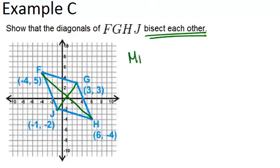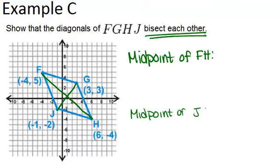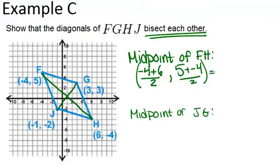So we're going to find the midpoint of each diagonal. So the midpoint of FH, and then we'll find the midpoint of JG. So to find the midpoint, we average the X coordinates of the endpoints, and then average the Y coordinates of the endpoints. So for FH, that would mean negative 4 plus 6 over 2 will give us our X coordinate. And then our Y coordinate is going to be 5 plus negative 4 over 2. And when we simplify that, we get 1, 1 half.